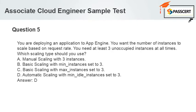Question 5: You are deploying an application to App Engine. You want the number of instances to scale based on request rate. You need at least three unoccupied instances at all times. Which scaling type should you use?